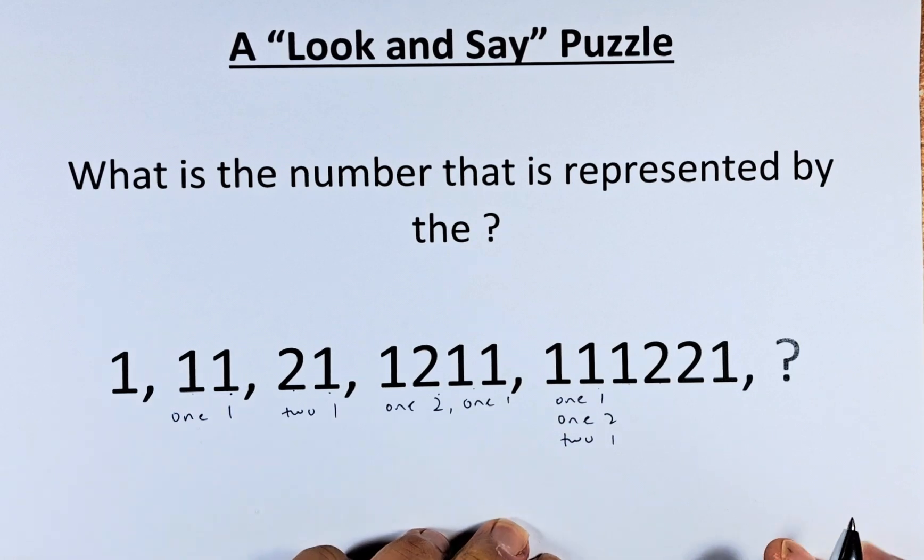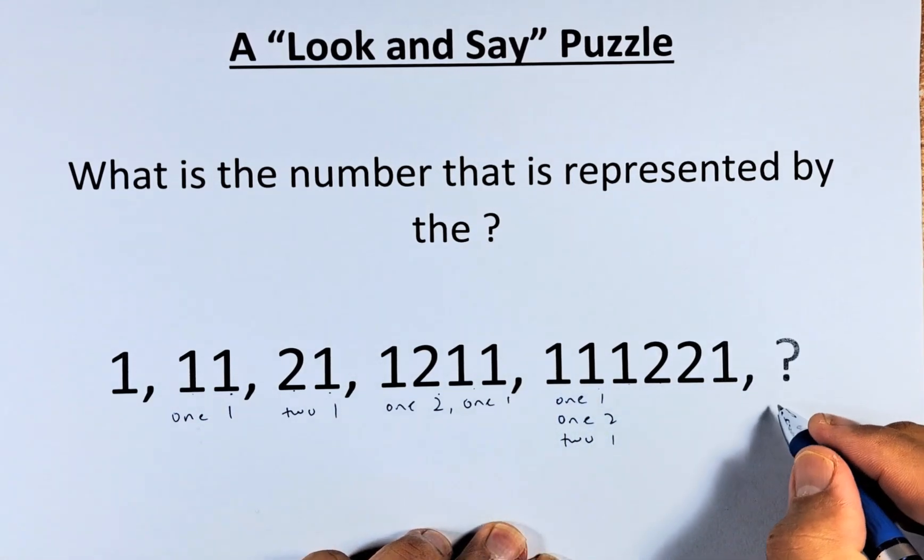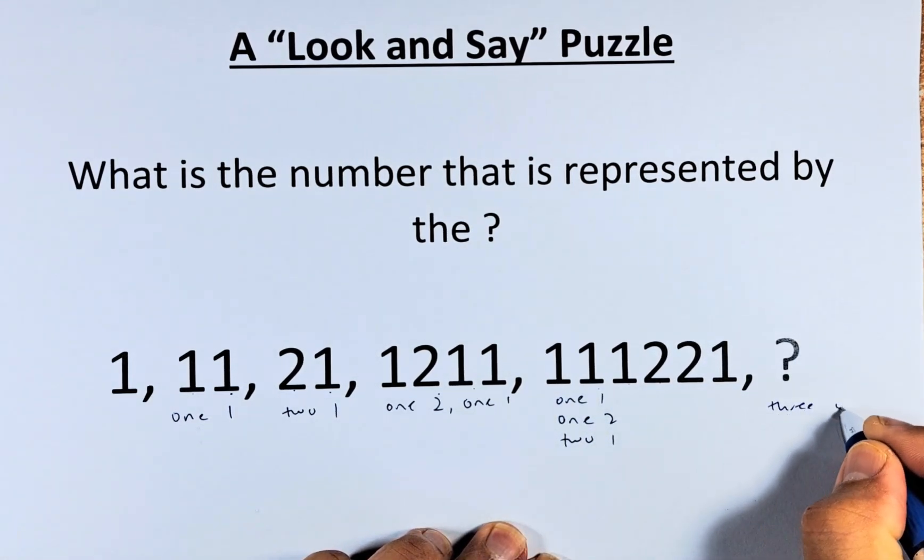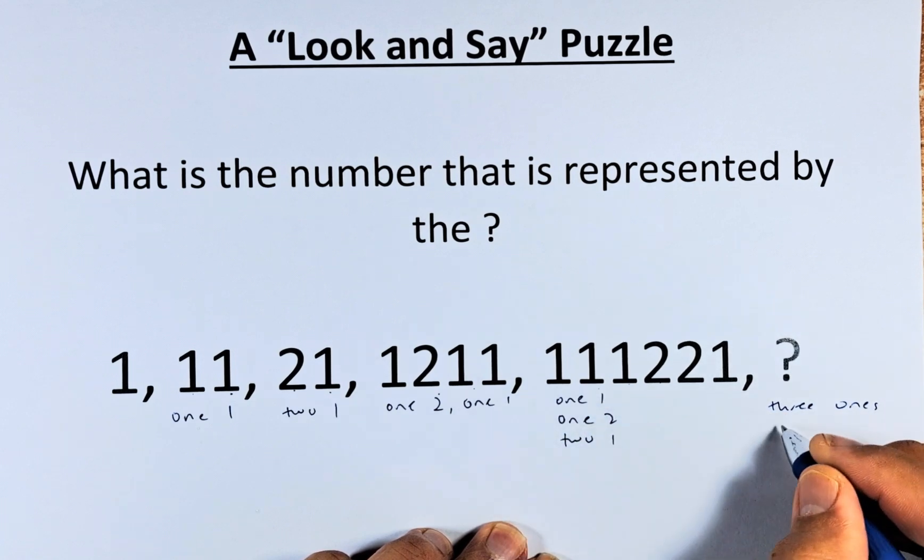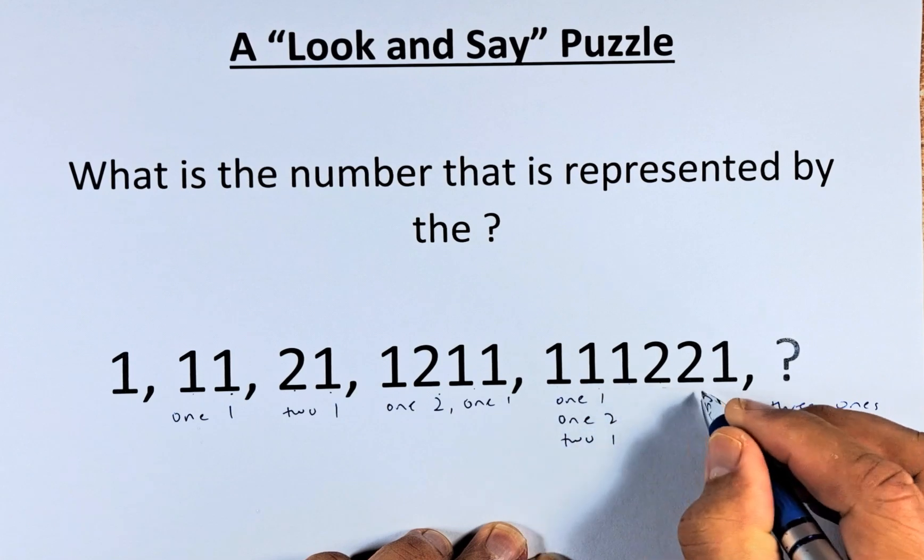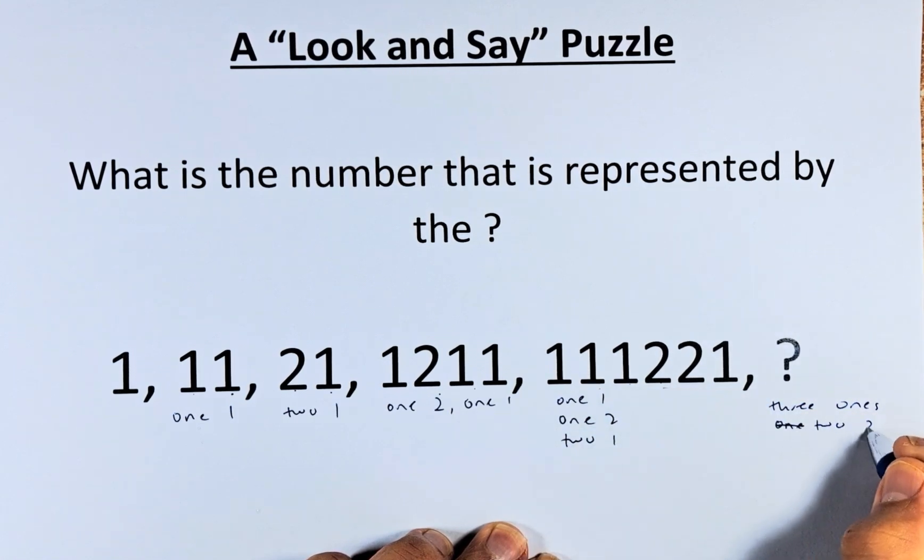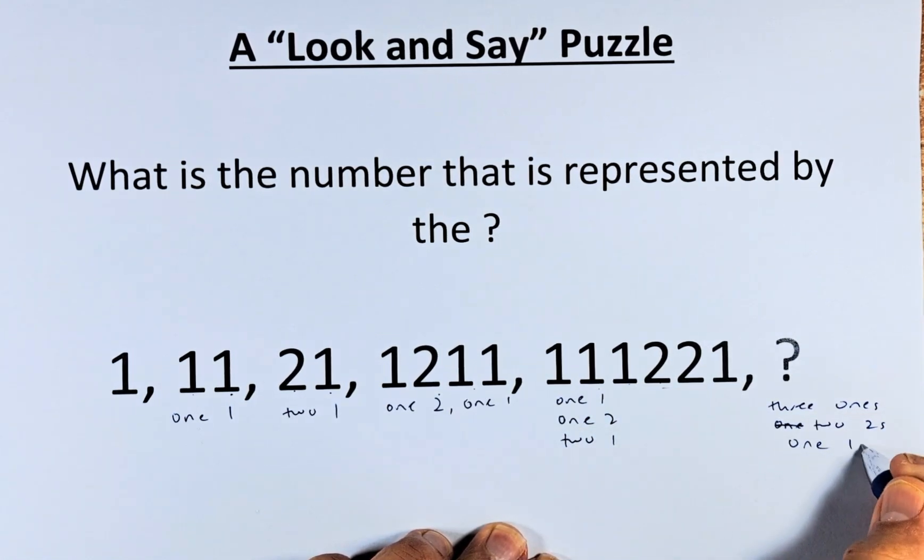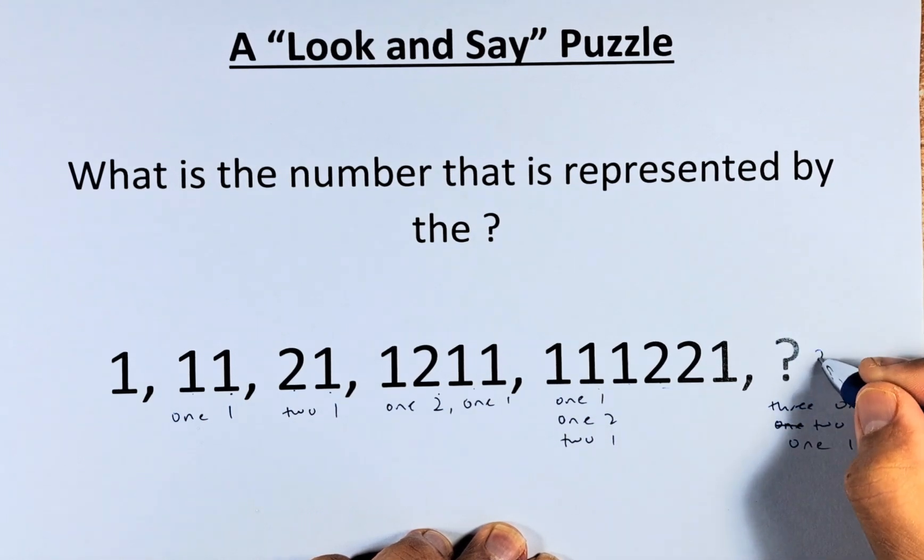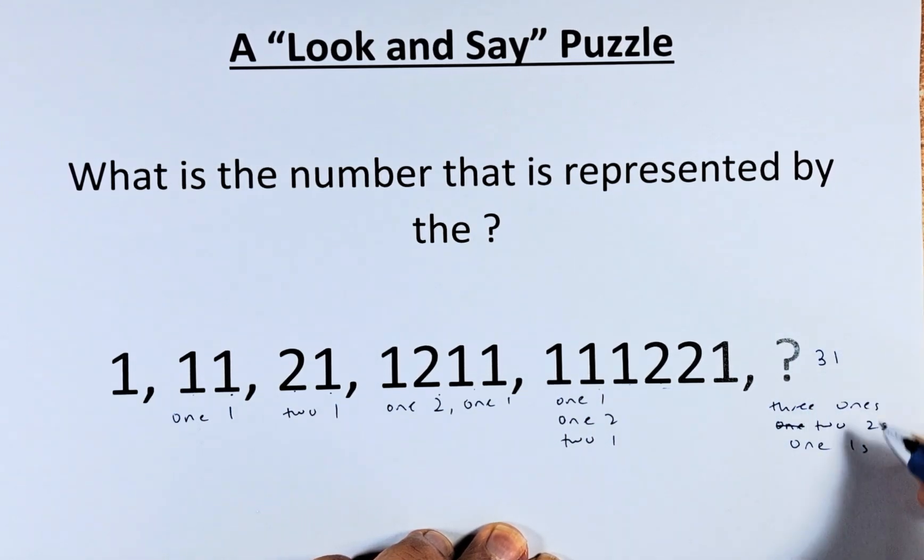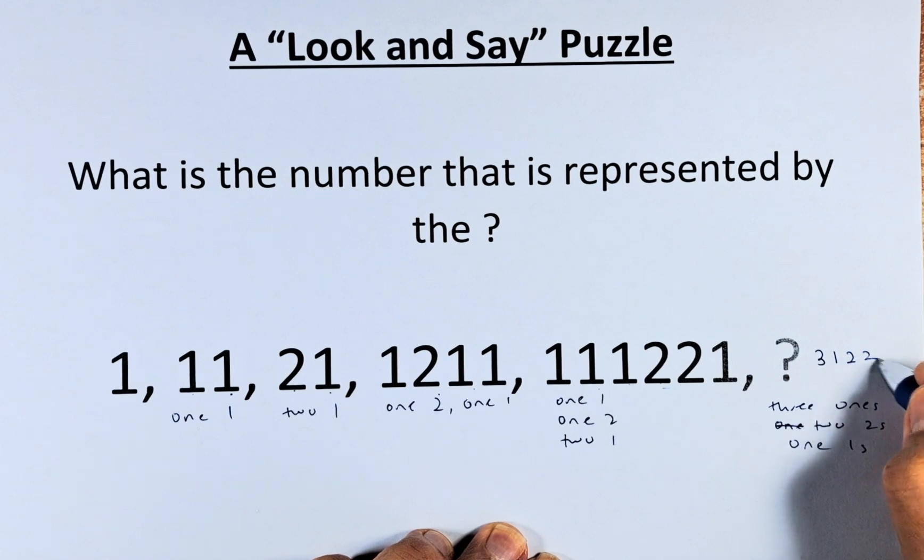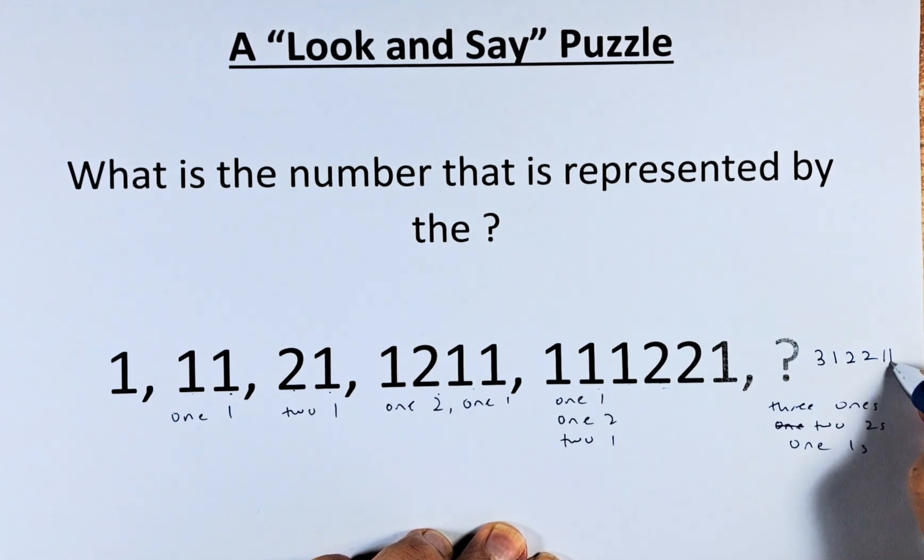And last but not least, you have three 1s, two 2s, and one 1. So it's going to be 312211.